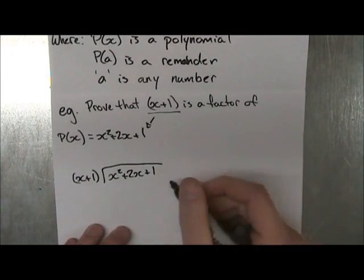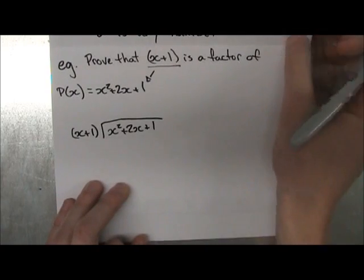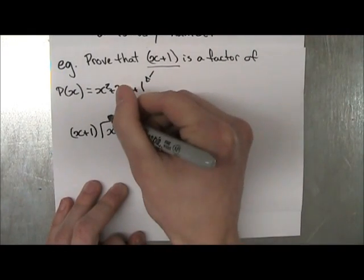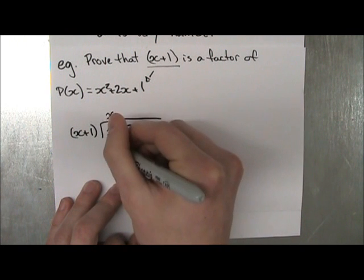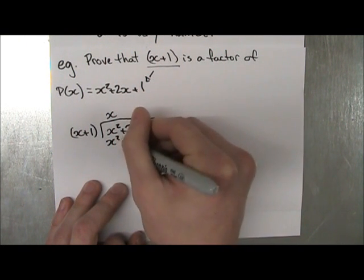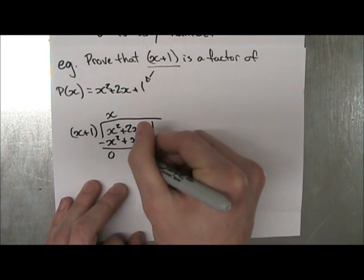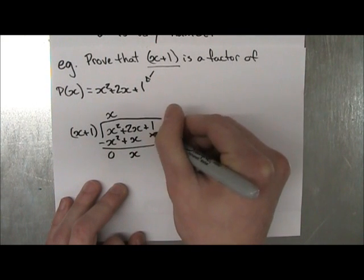So if we do this, and hopefully you remember how to do long division, it's going to be x, x times x is x squared, plus x, now if we subtract these two, we get 0 here, we get x here, and you drop this, you get plus 1.